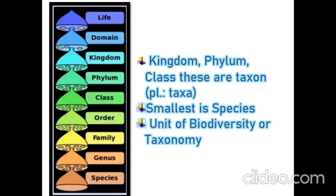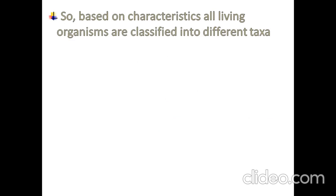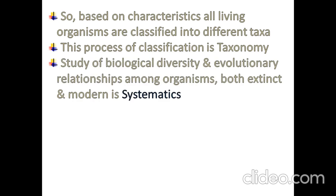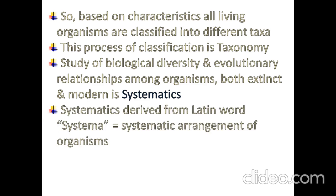The smallest taxon is species. Based on basic characteristics, all living organisms are classified into different taxa — this process of classification is called taxonomy. The study of biological diversity and evolutionary relationships among organisms, both extinct and modern, is called systematics. Systematics is derived from the Latin word 'systema,' meaning systematic arrangement of organisms.